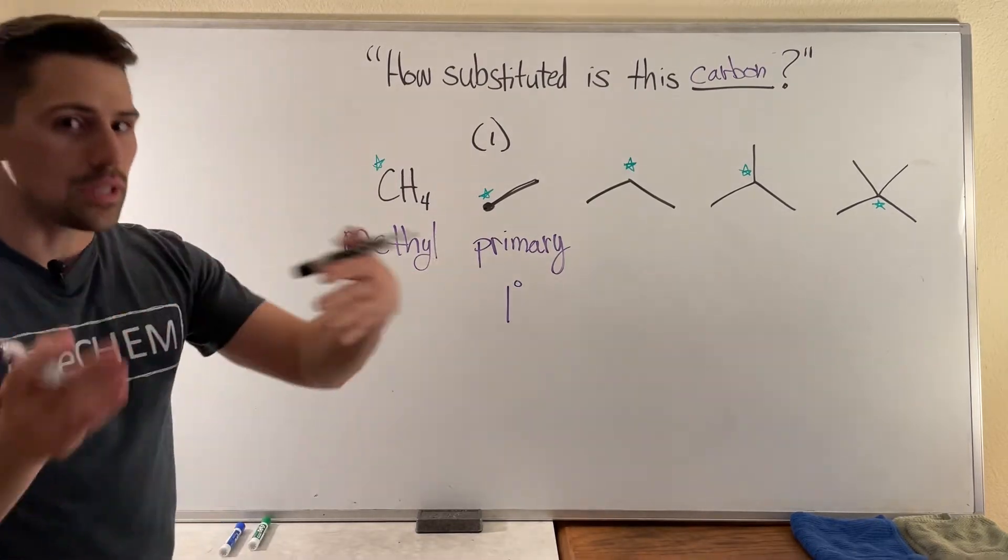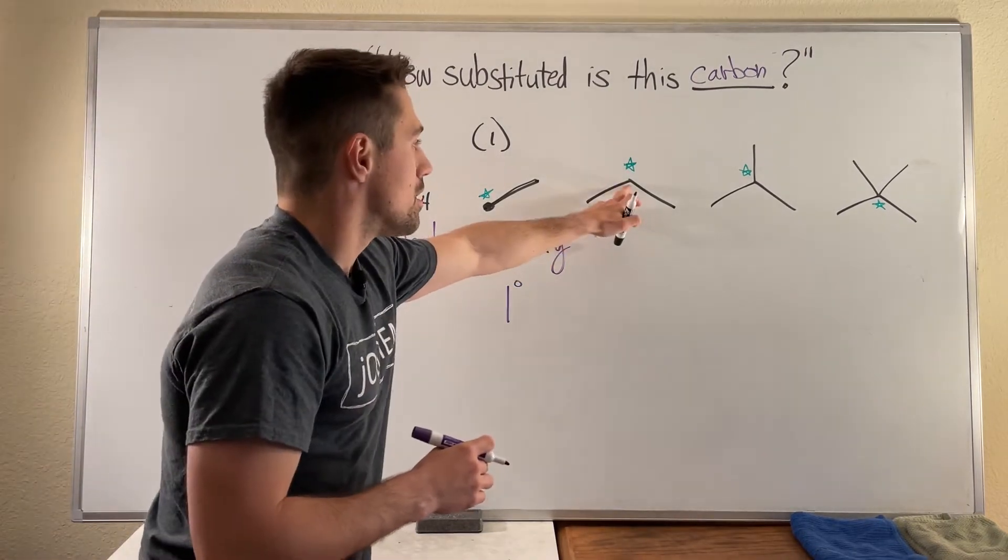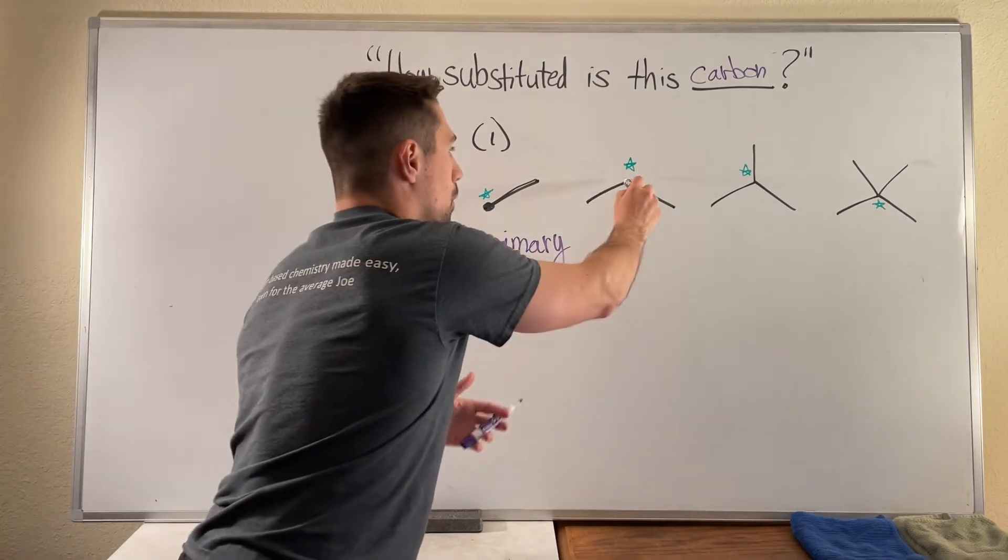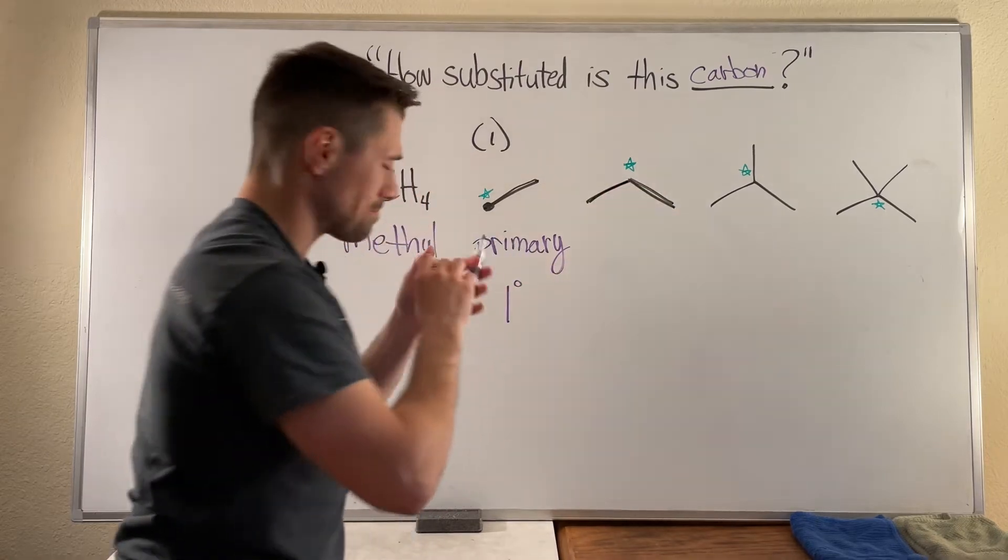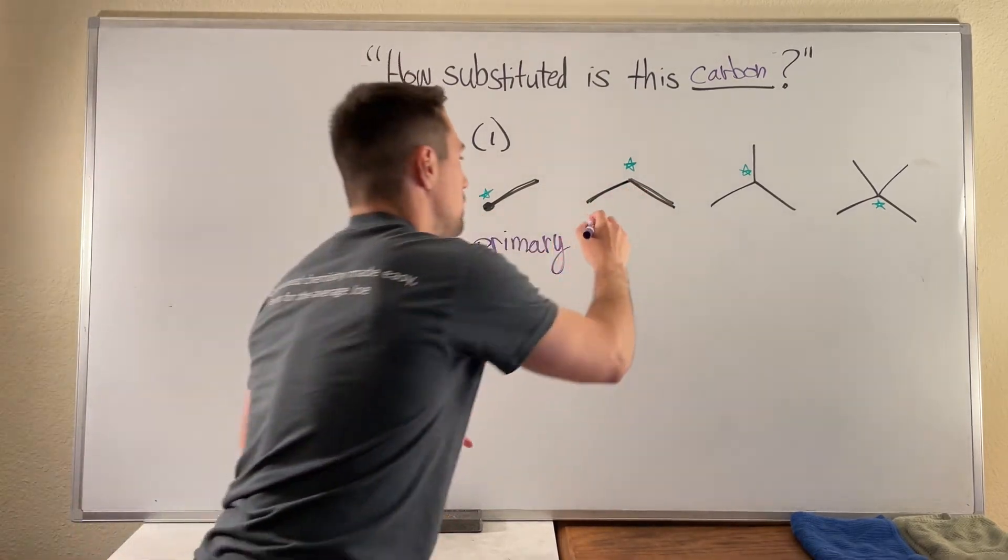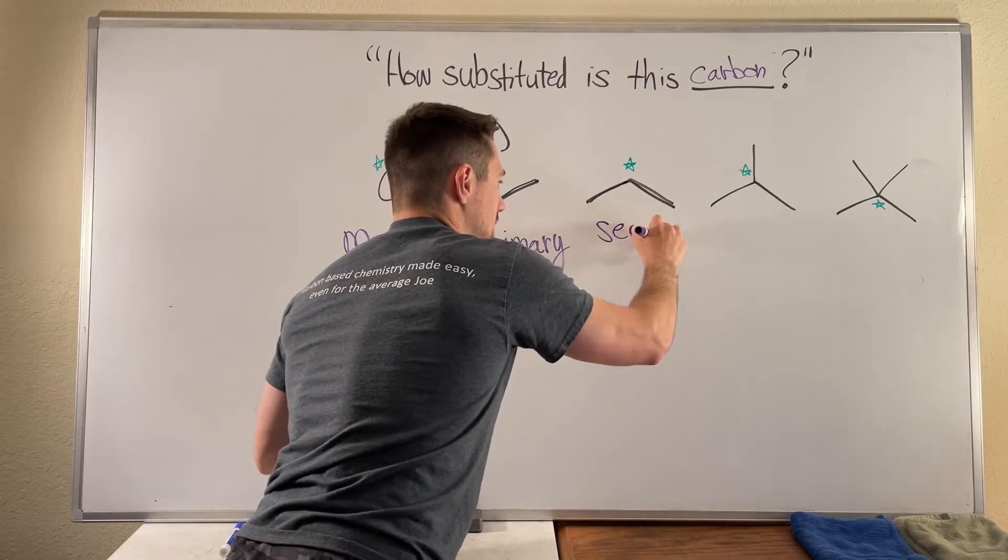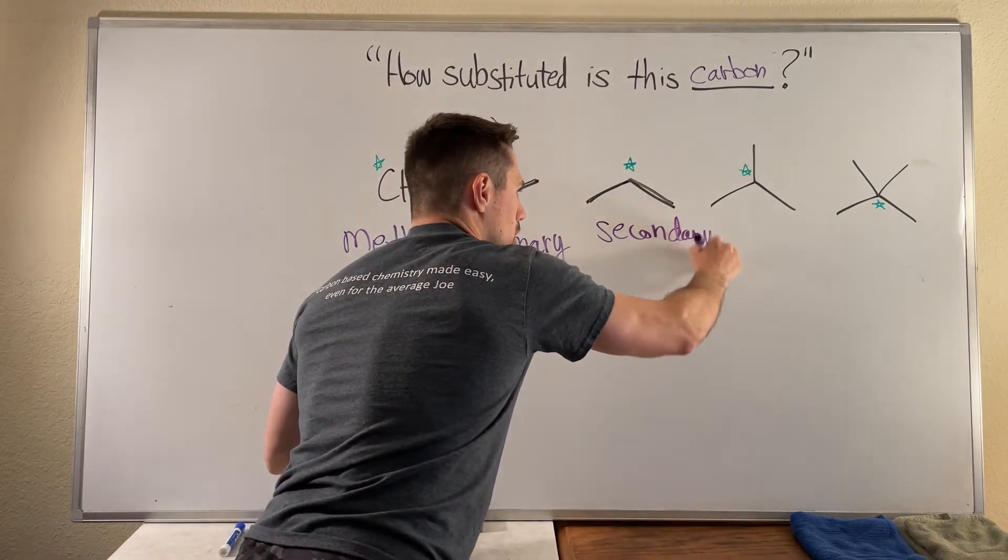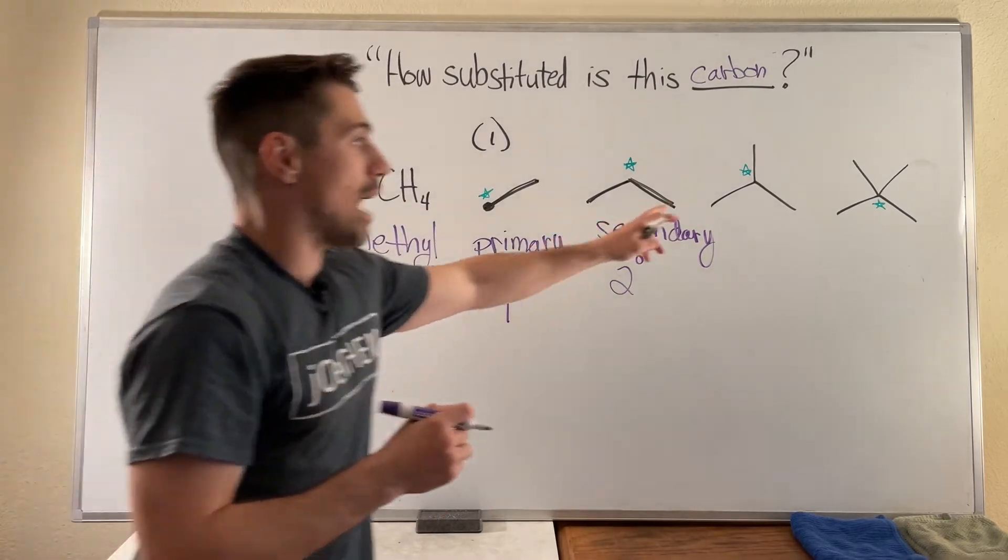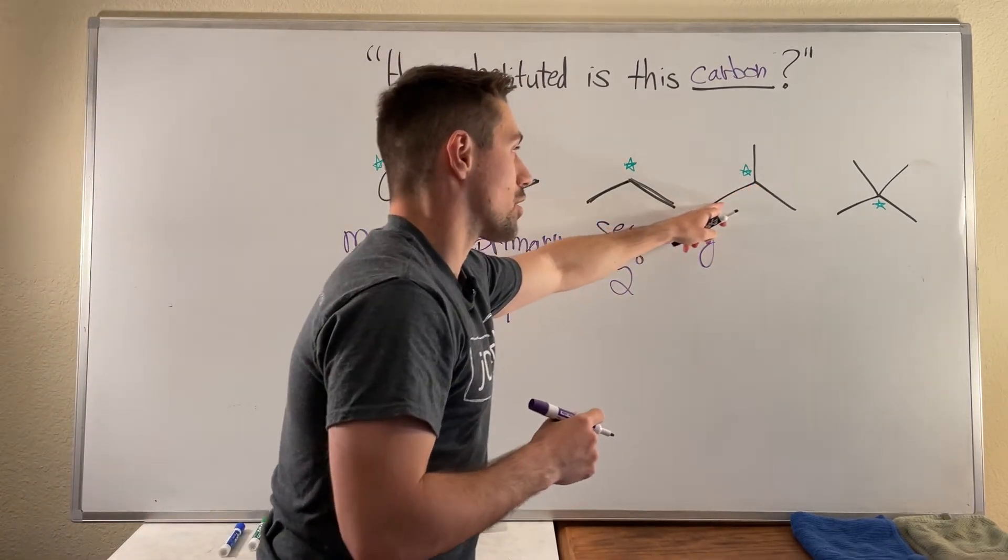So then I think you can see a pattern moving over here. This green starred carbon is attached to two carbons in total, one on the left, one on the right. So we can call this a secondary carbon. So you can either write that out or you can do the little two with a degree symbol.